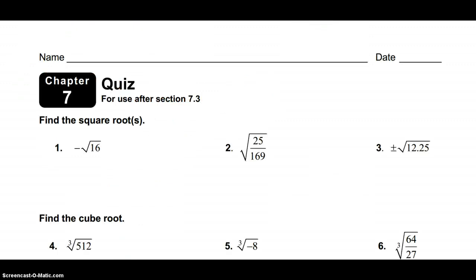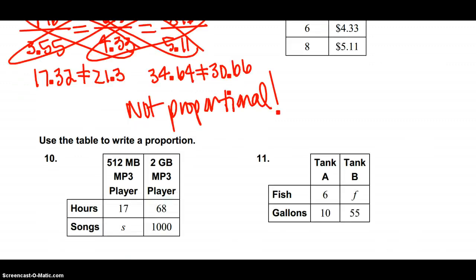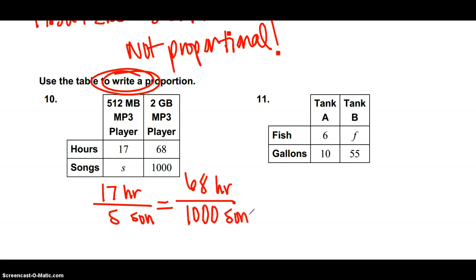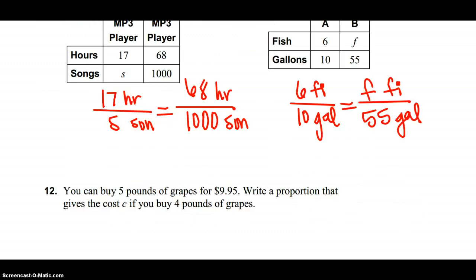Number 10. A lot of you probably did more work than you had to do. All you have to do is write the proportion. So 17 hours over S songs is equal to 68 hours over 1,000 songs. That's it. Same thing over here. Six fish per 10 gallons is equal to F fish per 55 gallons. All you had to do was write the proportion. You did not have to solve it.